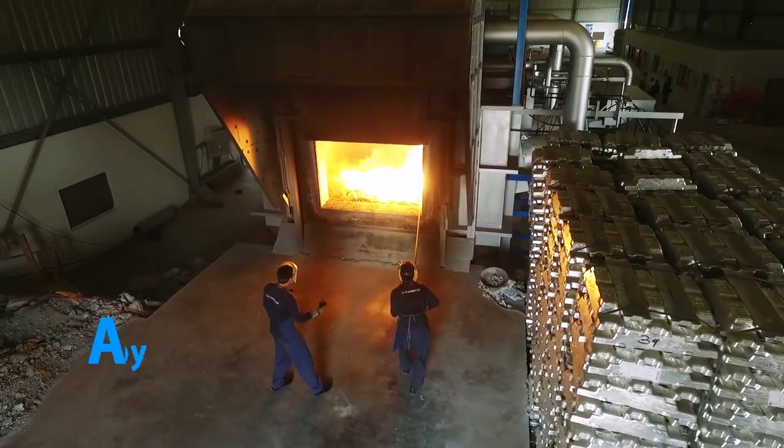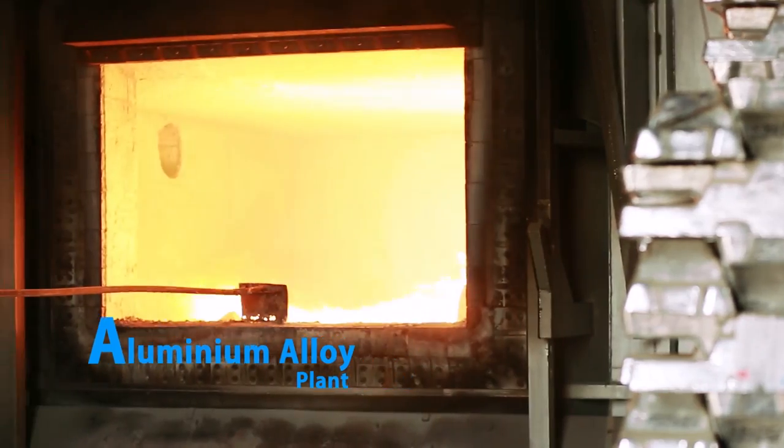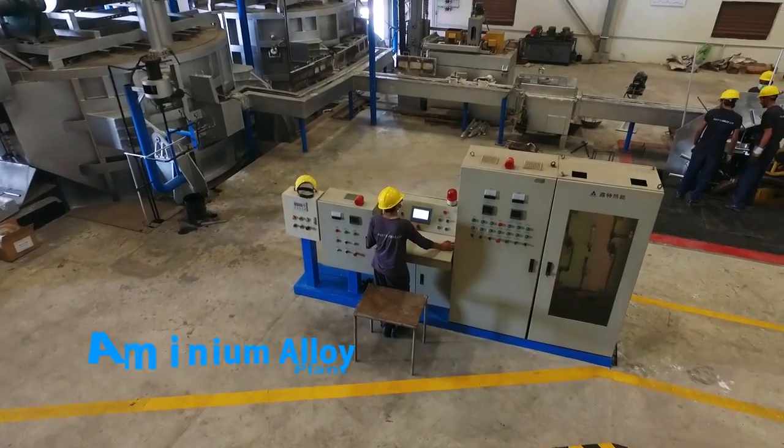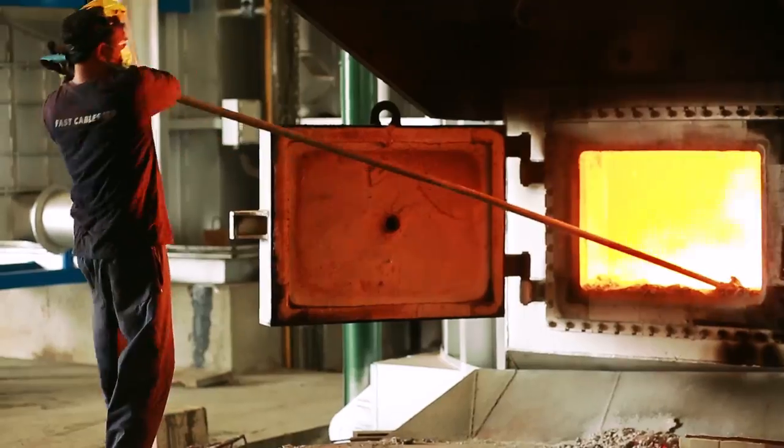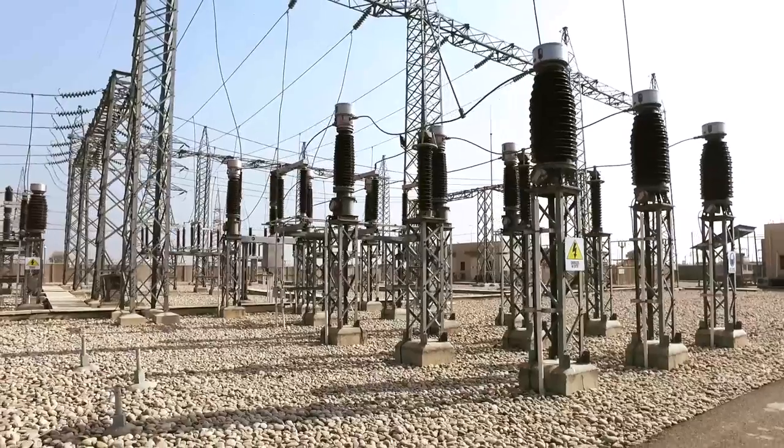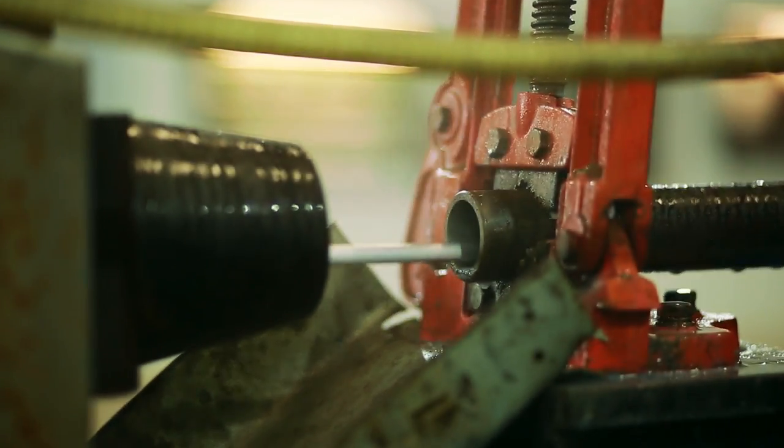We have also set up the first aluminum alloy plant in Pakistan to allow complete production of all aluminum alloy conductors, which can be used to strengthen our national power grid due to their lightweight and high current carrying capacity.